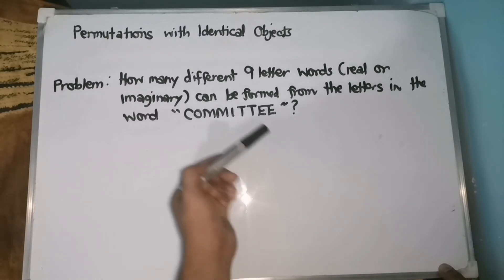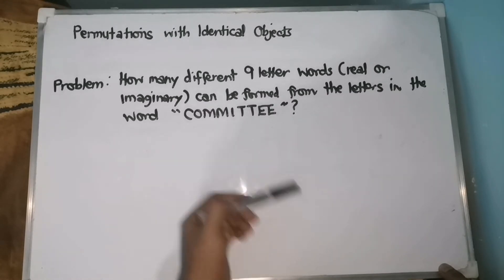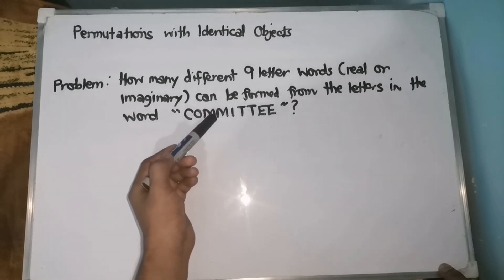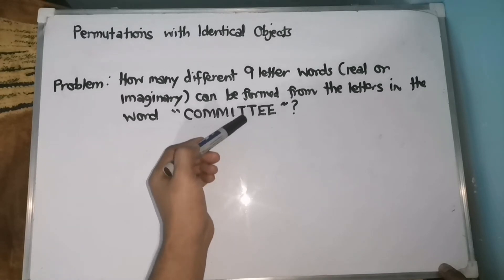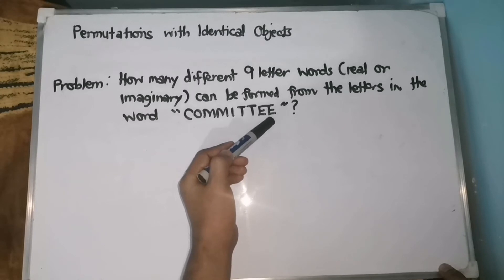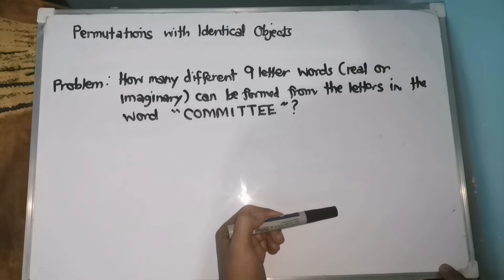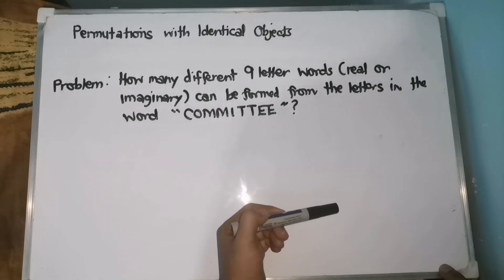Ano yung identical objects dito sa salitang 'committee'? So, merong mga letters na nauulit such as M — kasi double M siya — T, and then E. Therefore, the presence of these repeated letters reduces the number of different words.